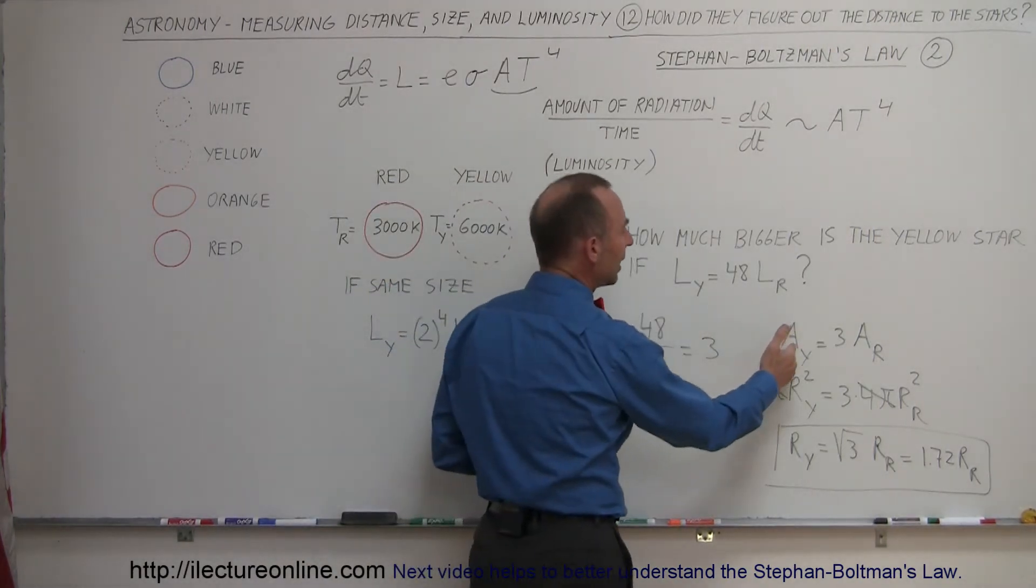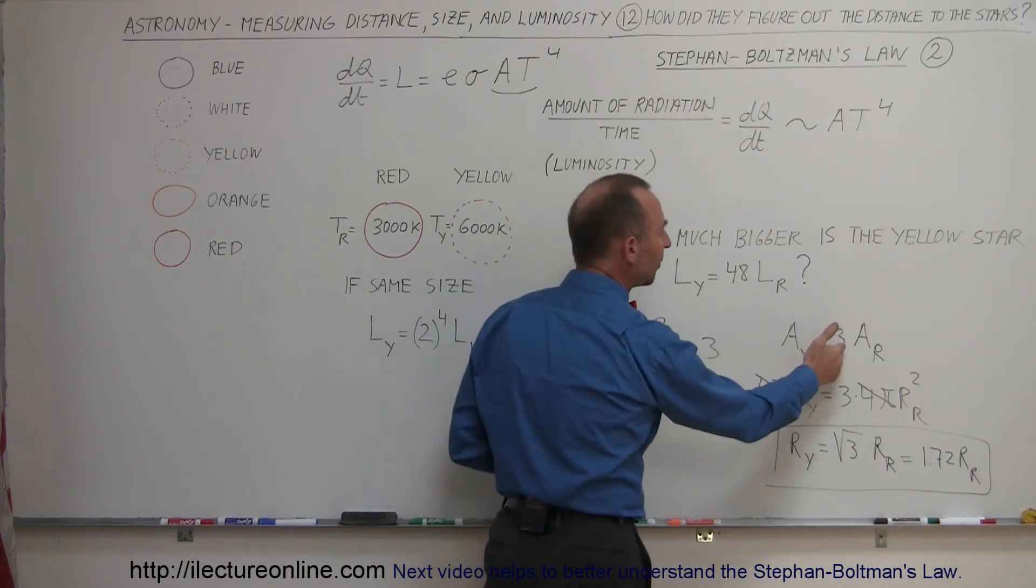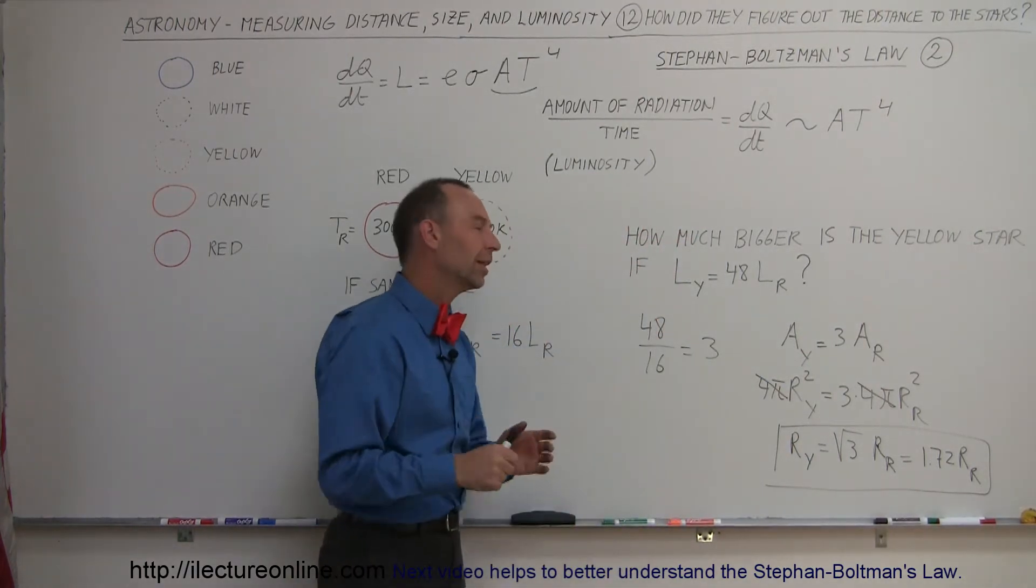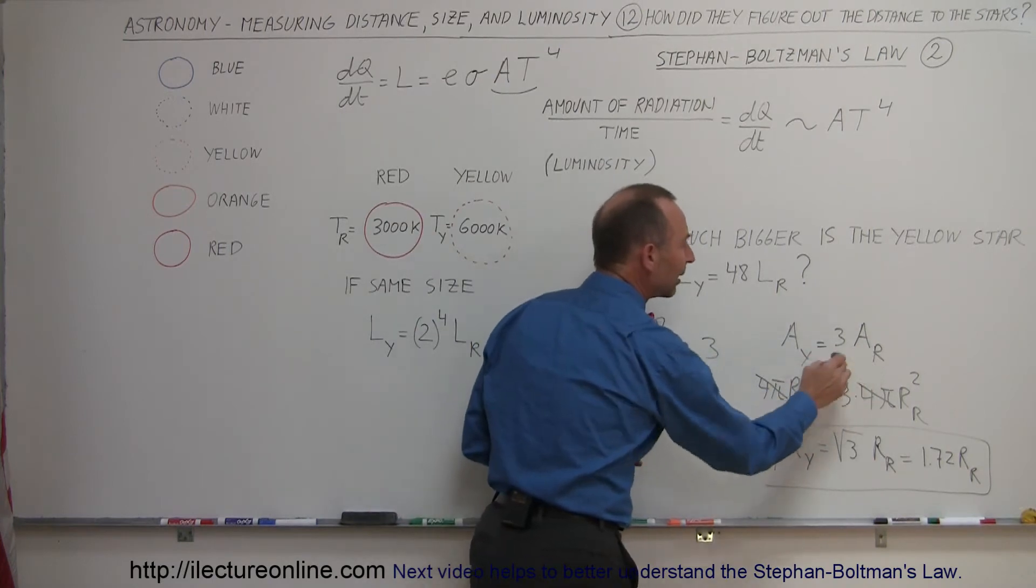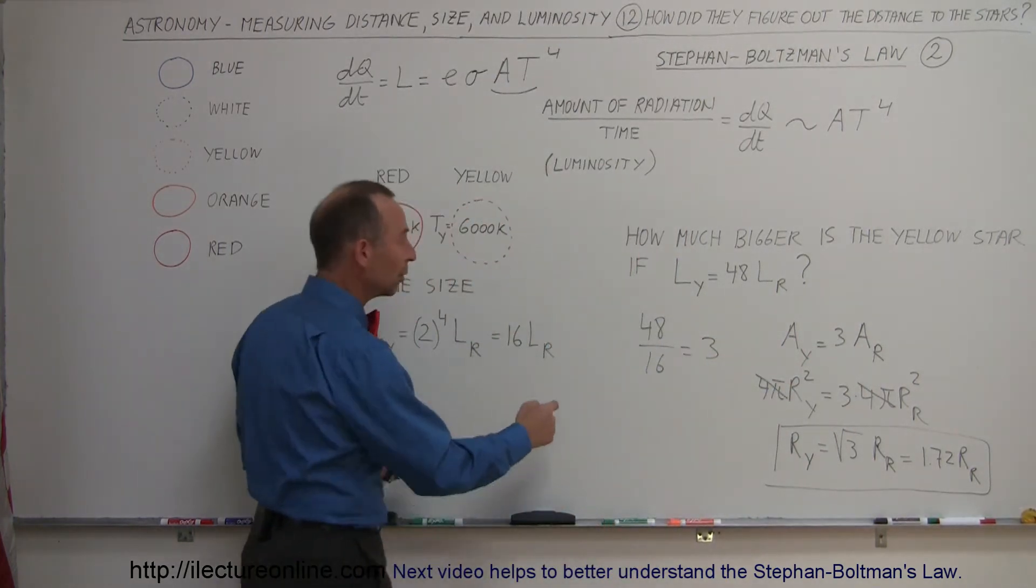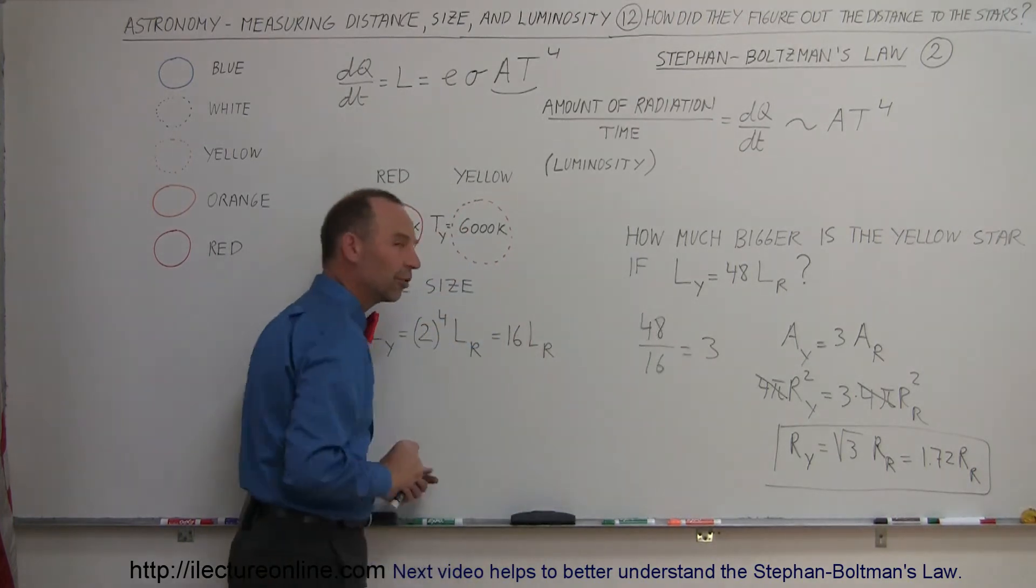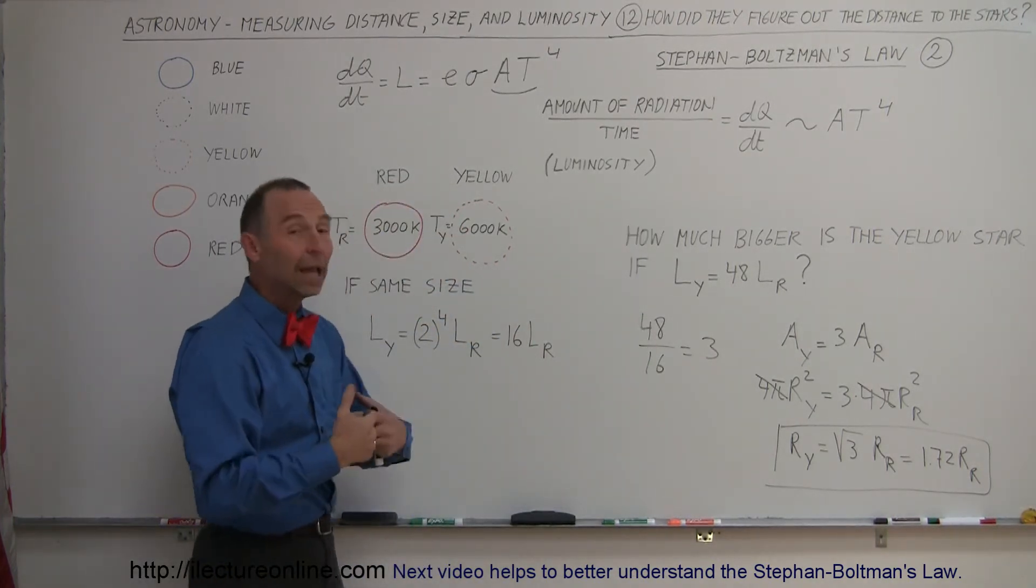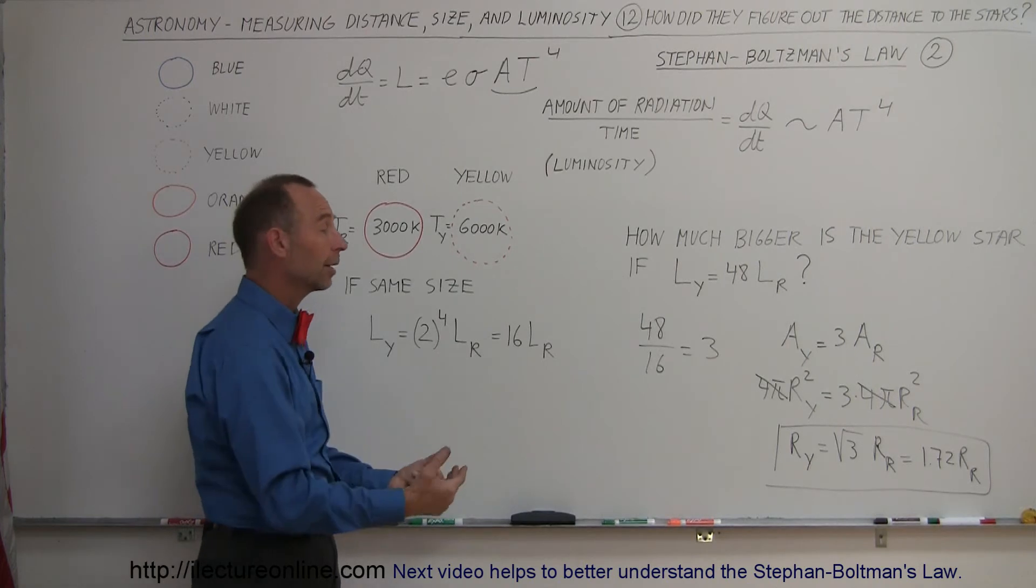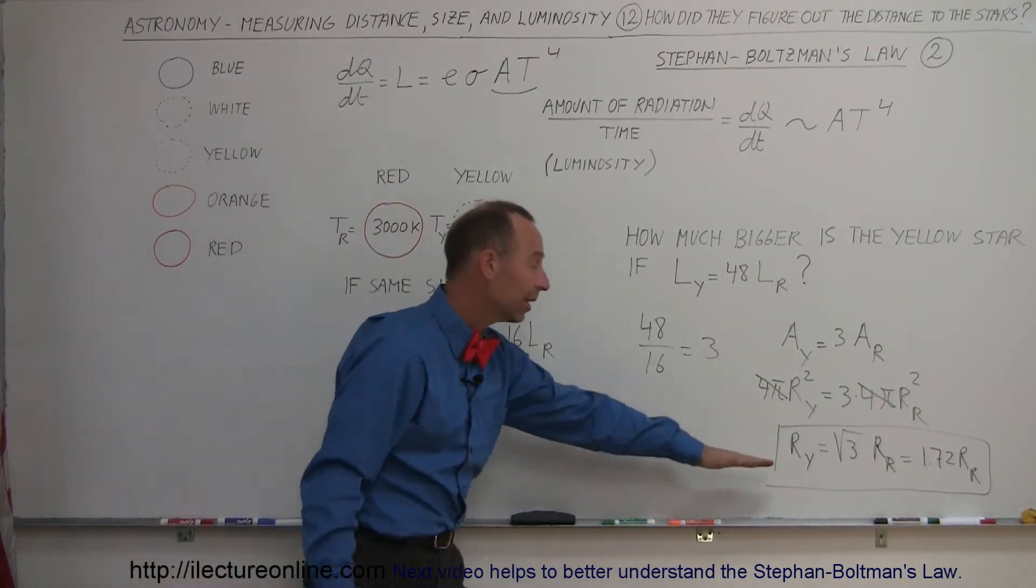And so then if they said well the increase of the area must be that many times, or I should say the area must be that many times bigger than the area of the other star, because all we do is take the actual luminosity difference divided by the luminosity difference accounted for by the temperature and we get the luminosity difference due to the area. We take the square root of both sides and now we know how much bigger the yellow star is compared to the red star.